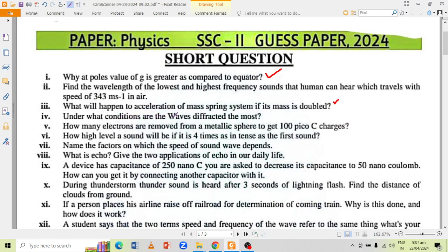Under what conditions are the waves diffracted the most? How many electrons are removed from a metallic sphere to get 100 picocoulomb charge? And how high level a sound will be if it is 4 times as intense as the first sound?